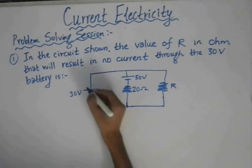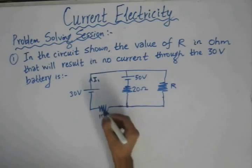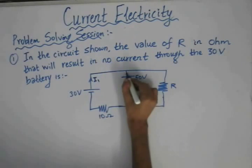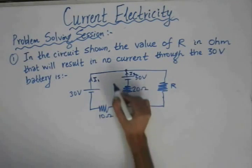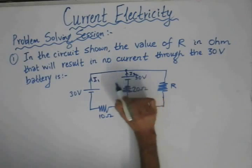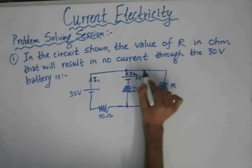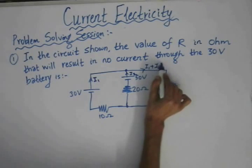Let us assume that the current flowing through this battery is I1, which as per our case is equal to zero, and the current due to this cell is I2. If we apply KCL at this node, the summation of incoming current must equal the summation of outgoing current, so the outgoing current would be I1 plus I2.